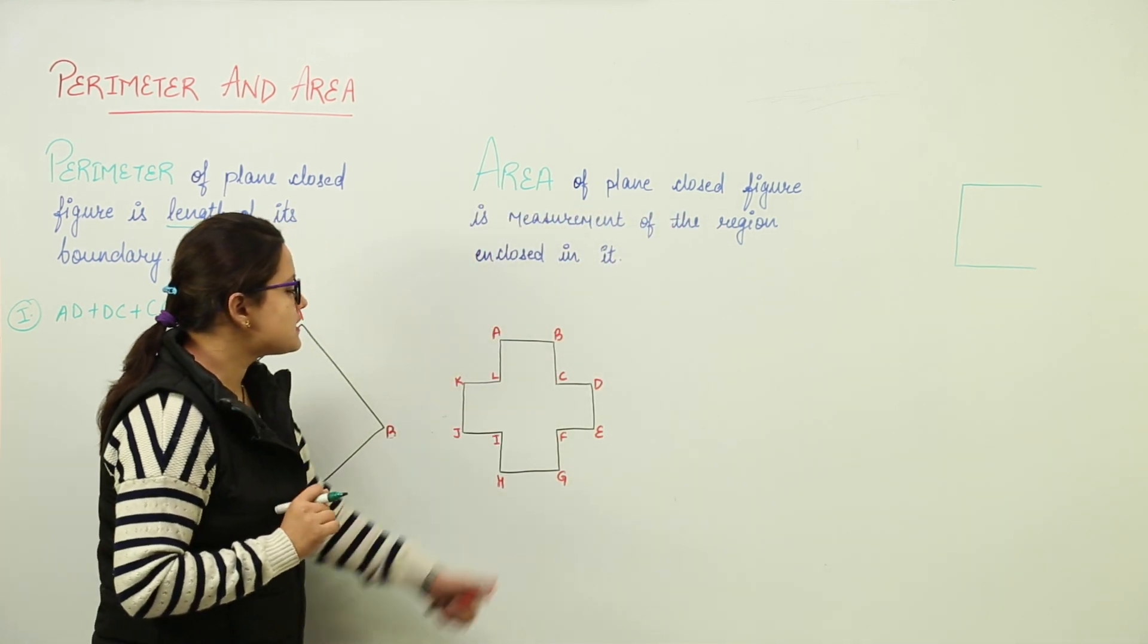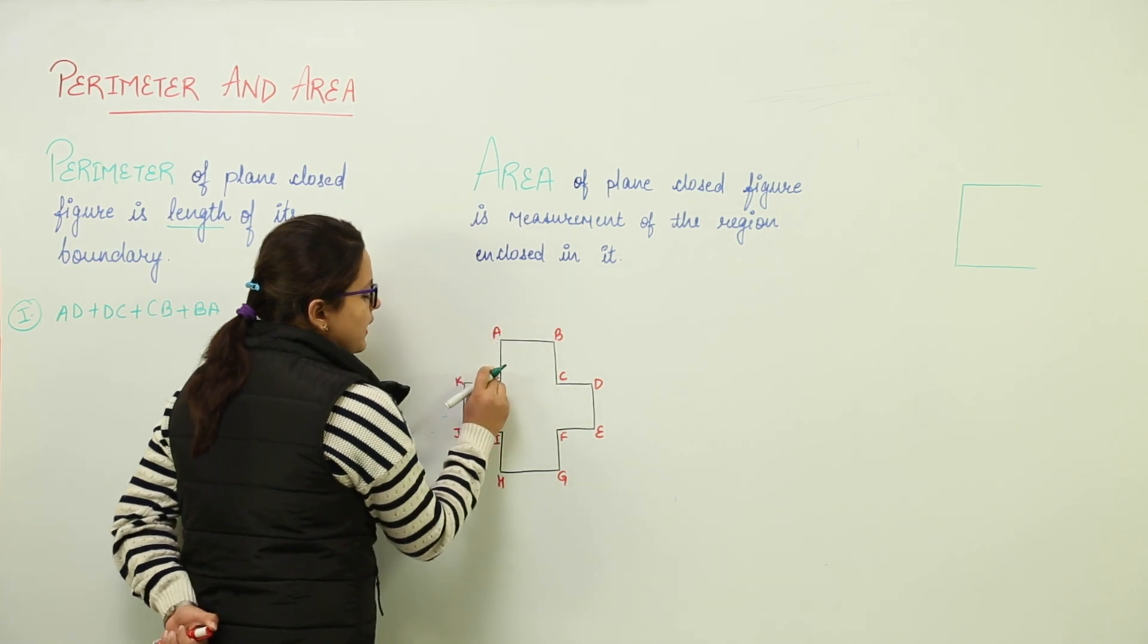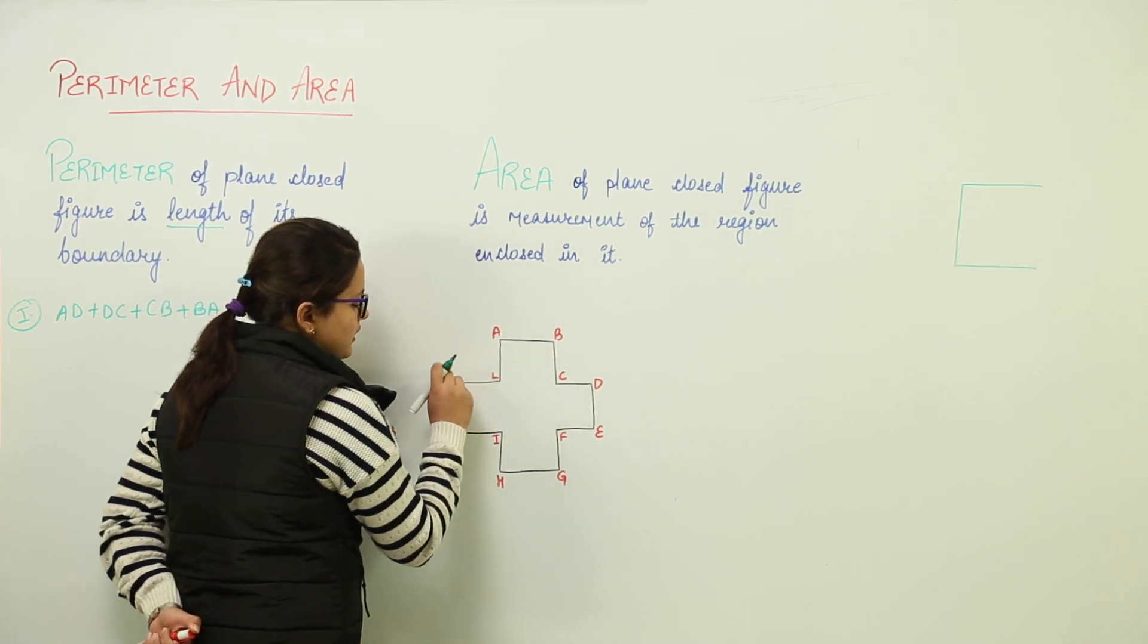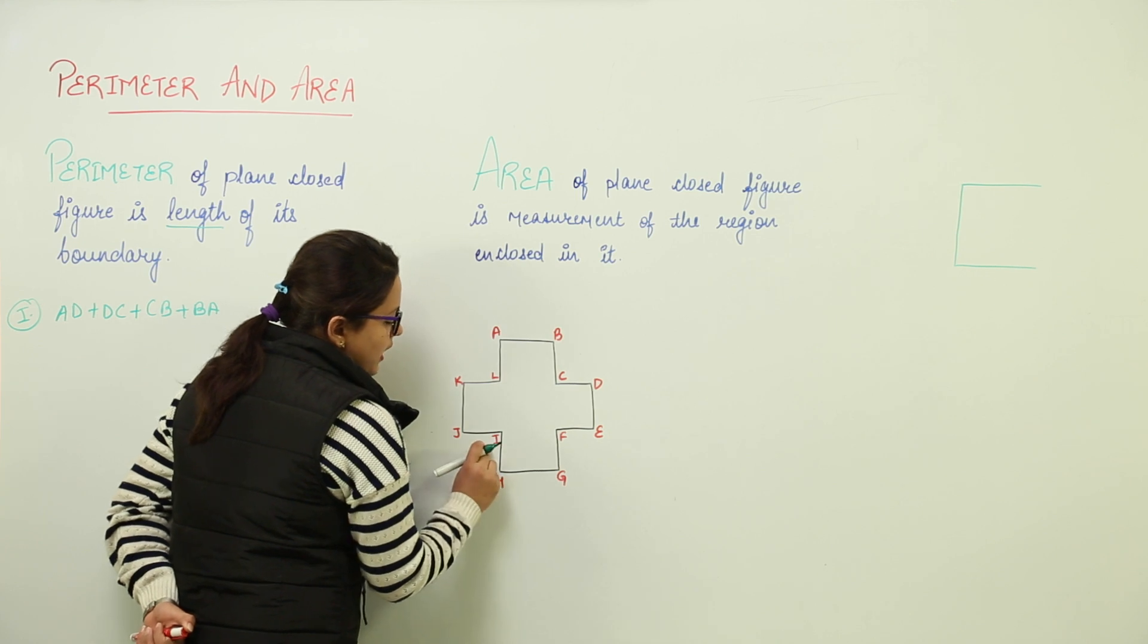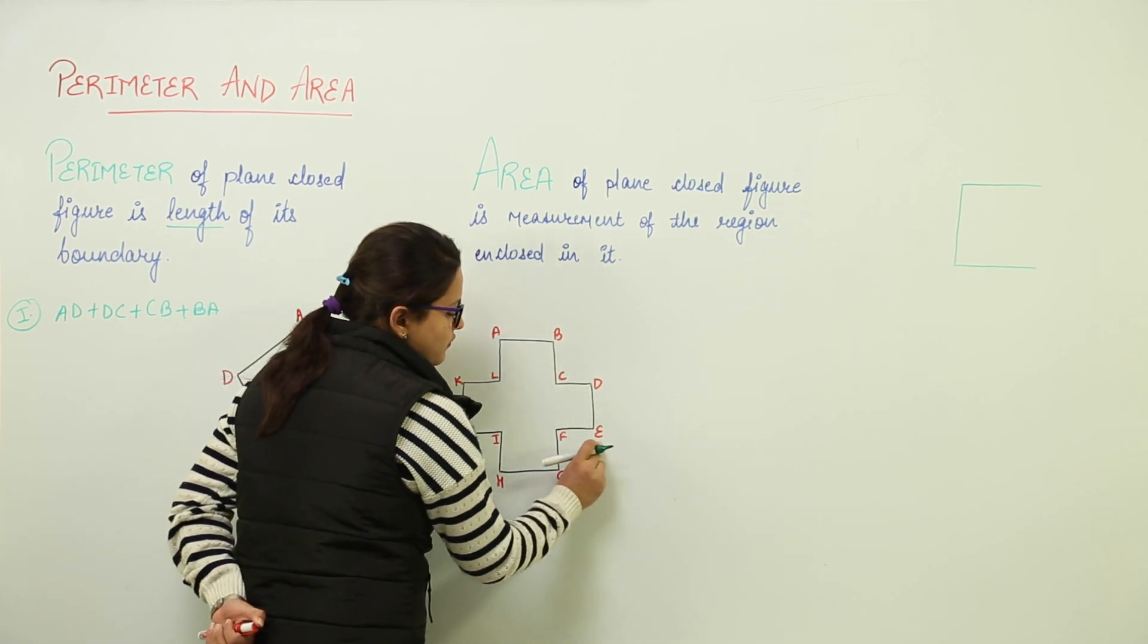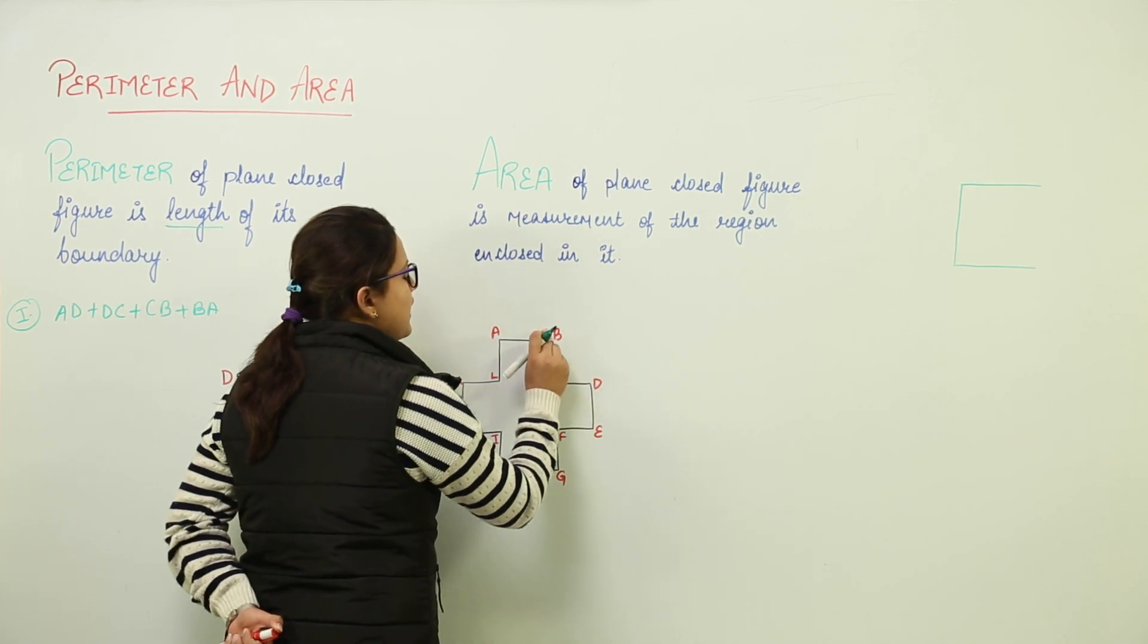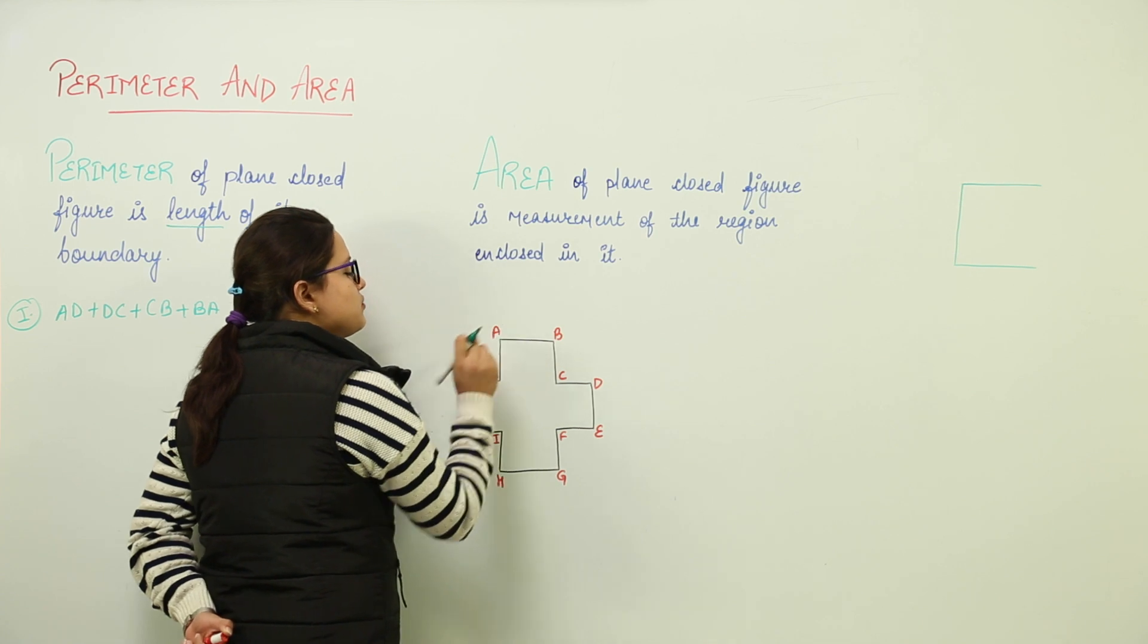Similarly, if you check for this example, over here we start moving from point A. Go to L, L to K, K to J, J to I, I to H, H to G, G to F, F to E, E to D, D to C, C to B and again from B back to A. So, that means what will be the perimeter for this particular shape?